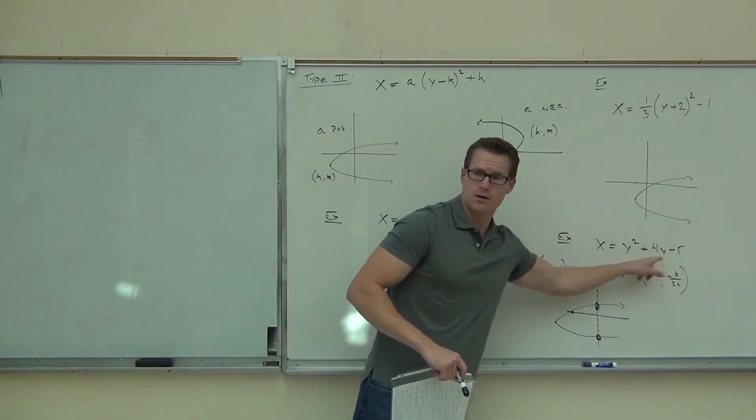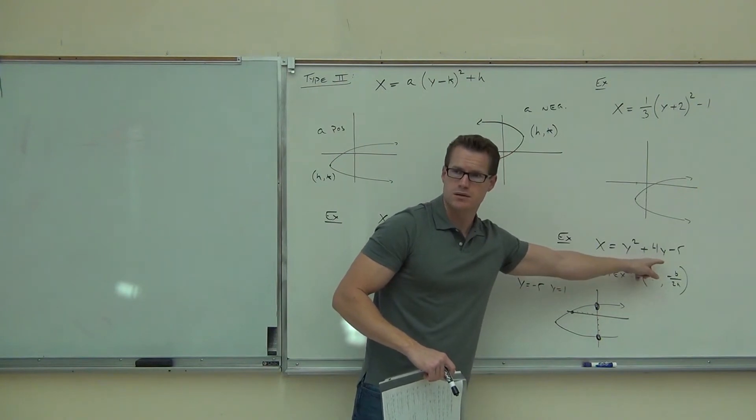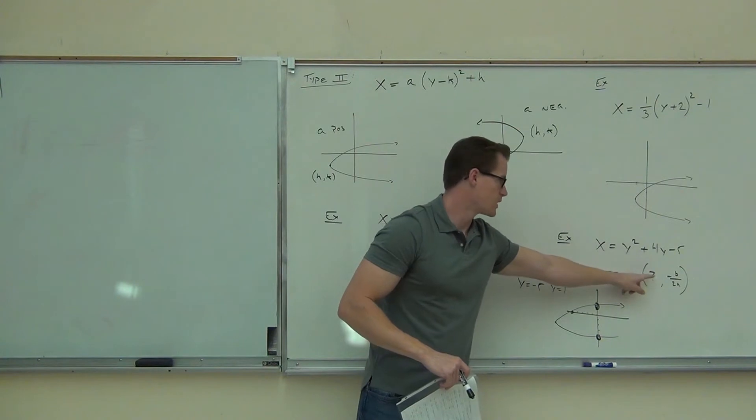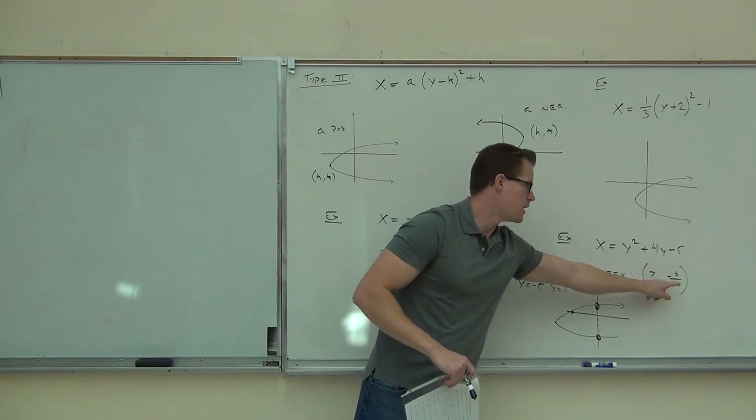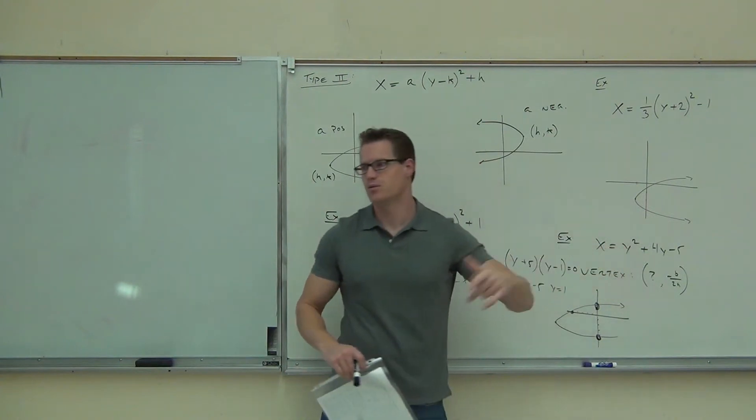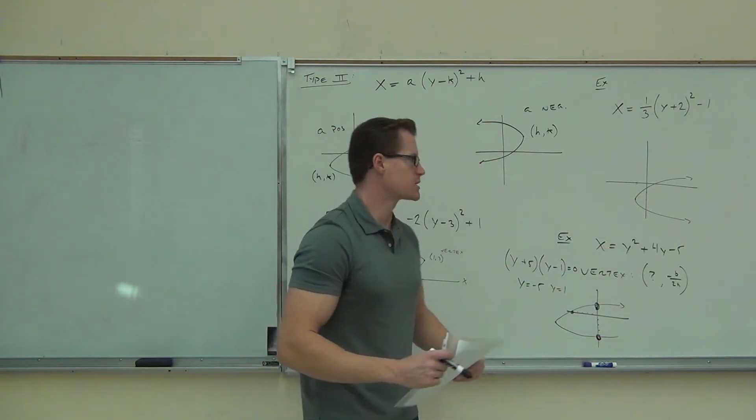Can you find out your a here? What's your a? What's your b? What's your c? So plug in negative b over 2a. Then we plug that into the function to find x instead of finding y. That will give you your vertex in this case.